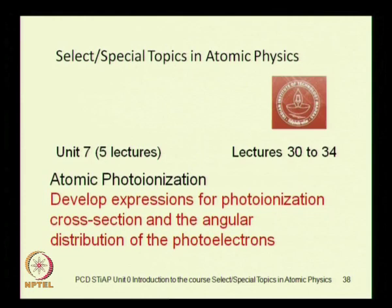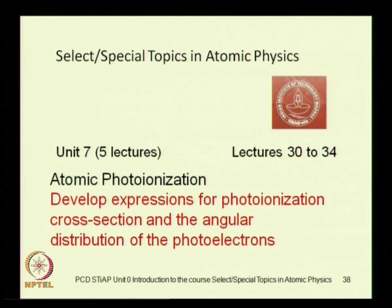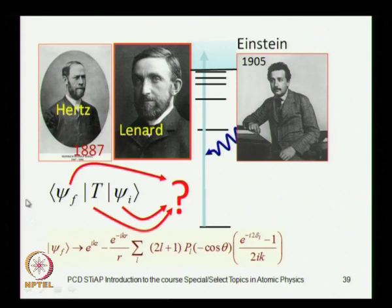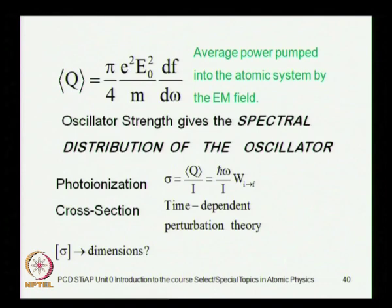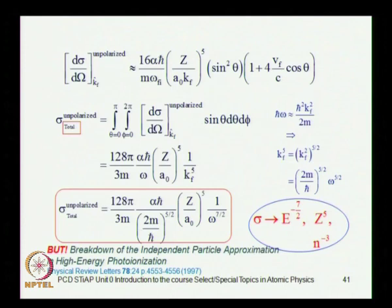In Unit 7, we will study atomic photo ionization using the continuum final-state solution with appropriate boundary conditions — specifically what are known as ingoing-wave boundary conditions. We will apply them to the study of atomic photo ionization to get the correct expressions for the oscillator strength and photo ionization cross sections. We will also define oscillator strength both classically and quantum mechanically.